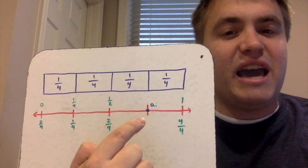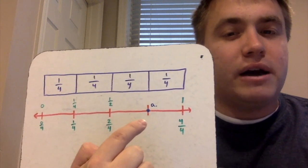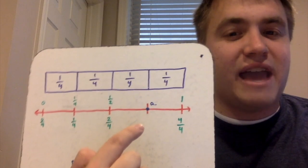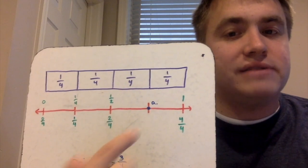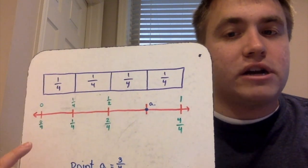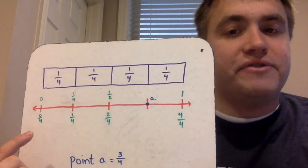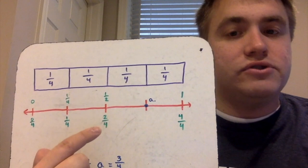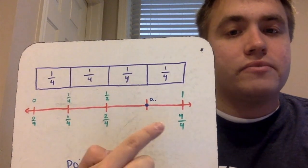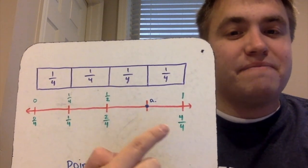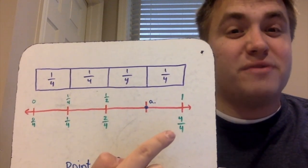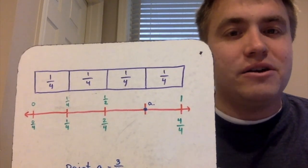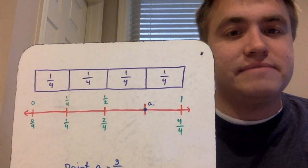Now if I go back to this A right here, I want you guys to try to figure out what this A would represent. We look at our pattern here: we have zero-fourths, one-fourth, two-fourths, something, and four-fourths. Try to figure out what that A would represent.